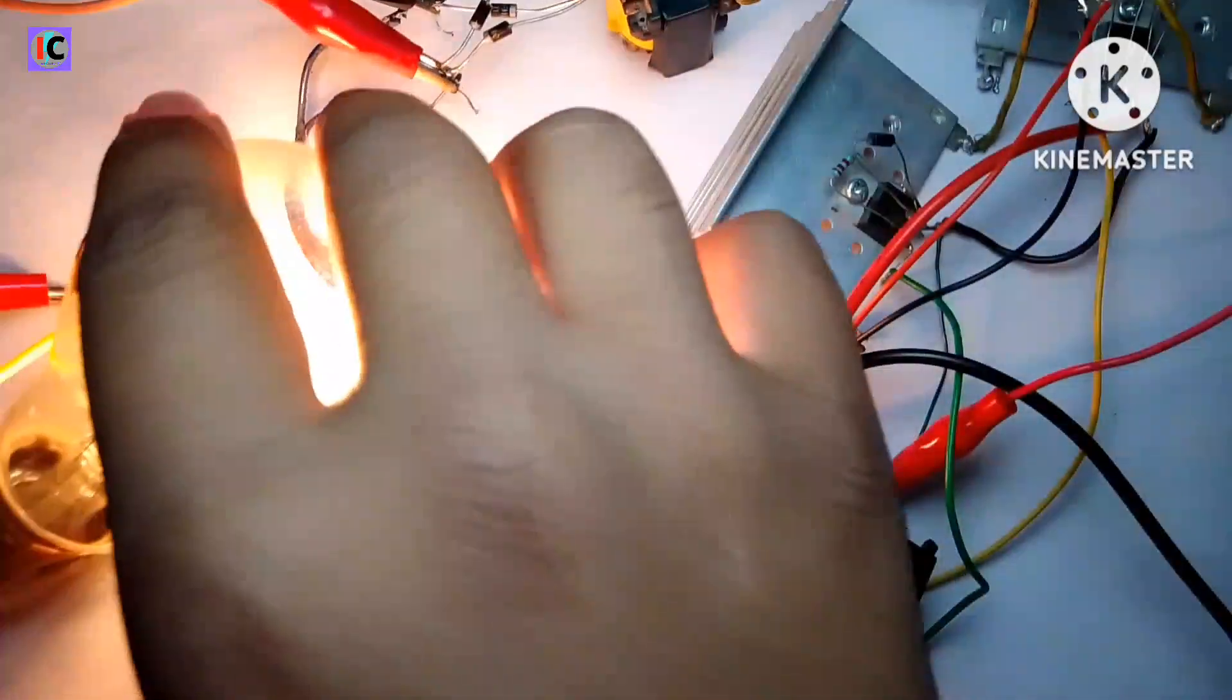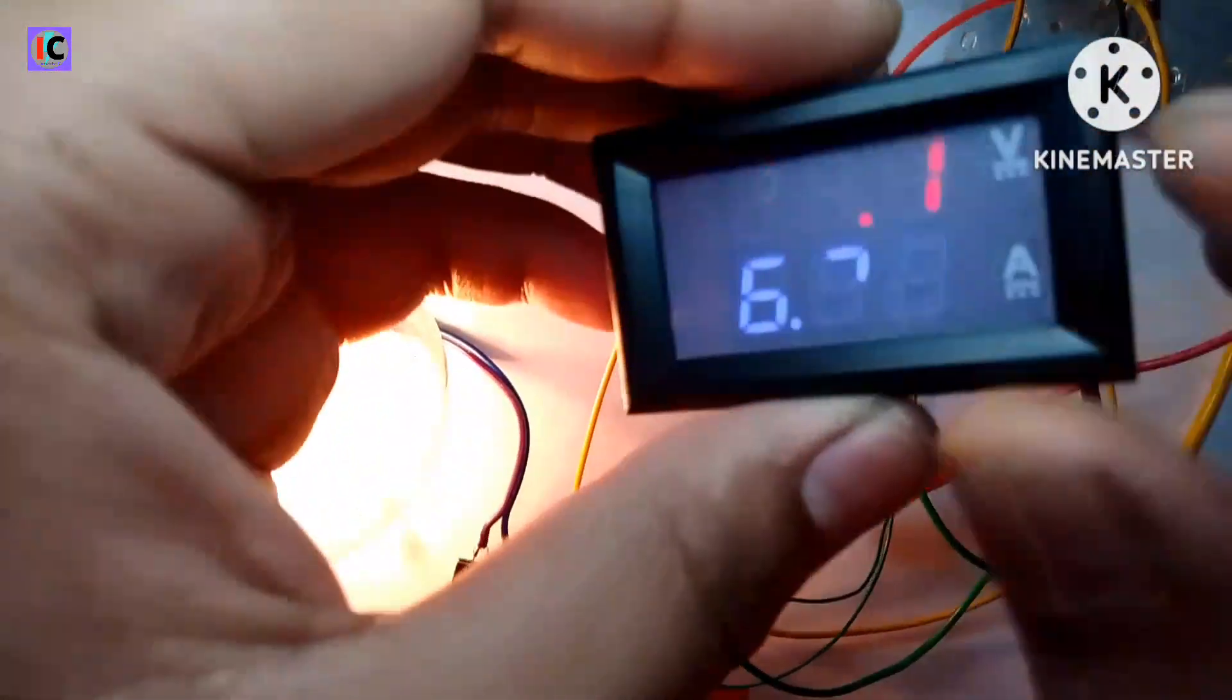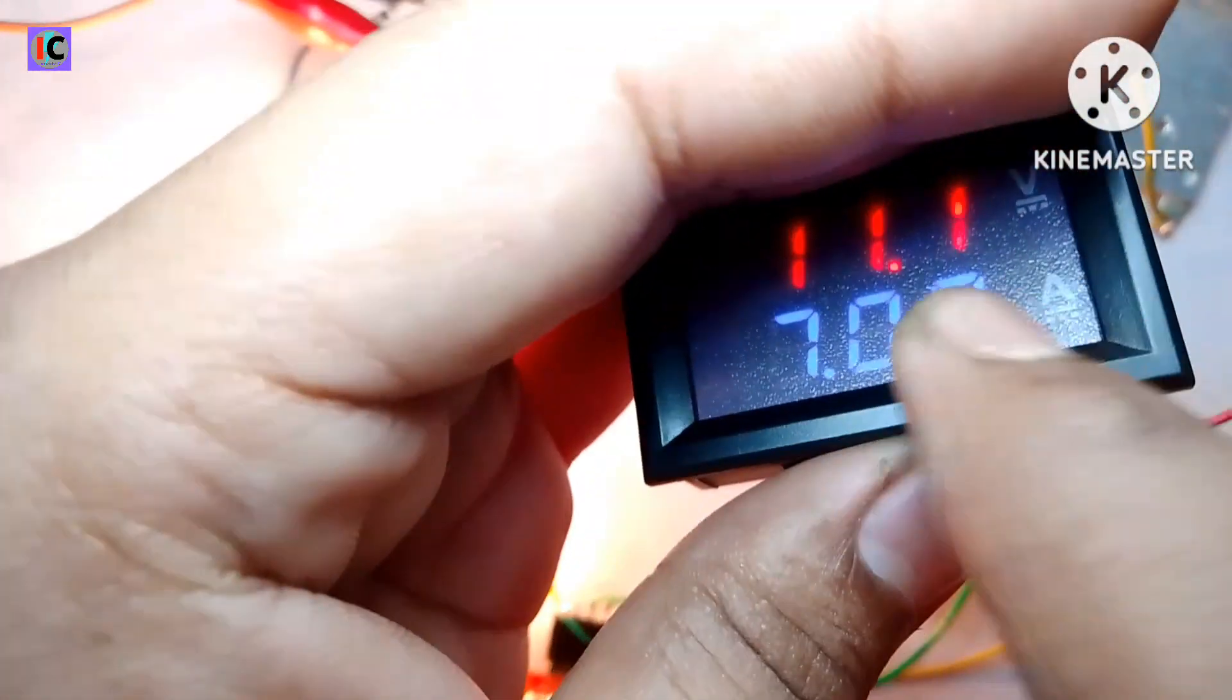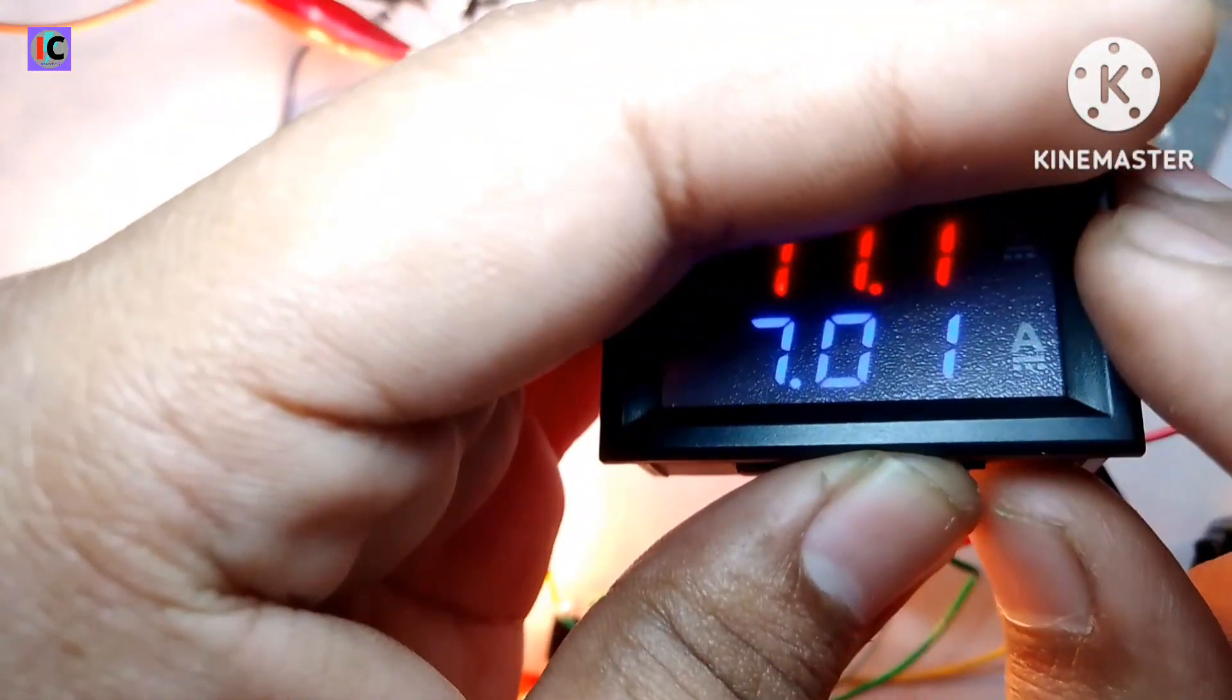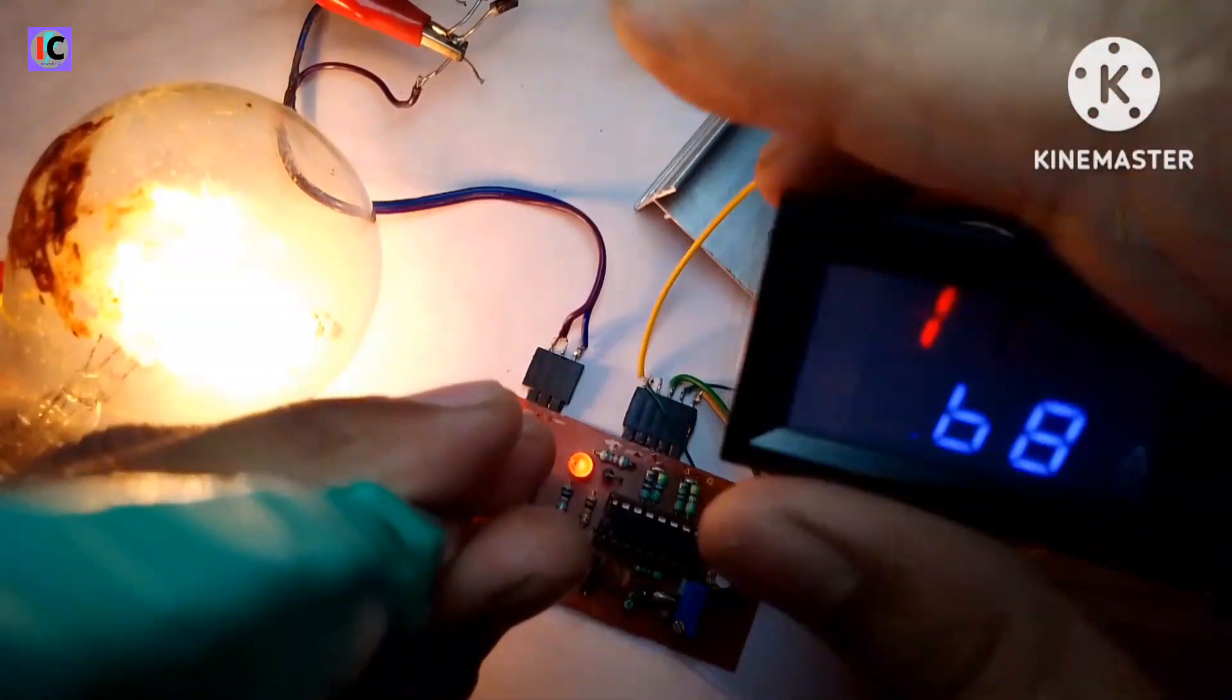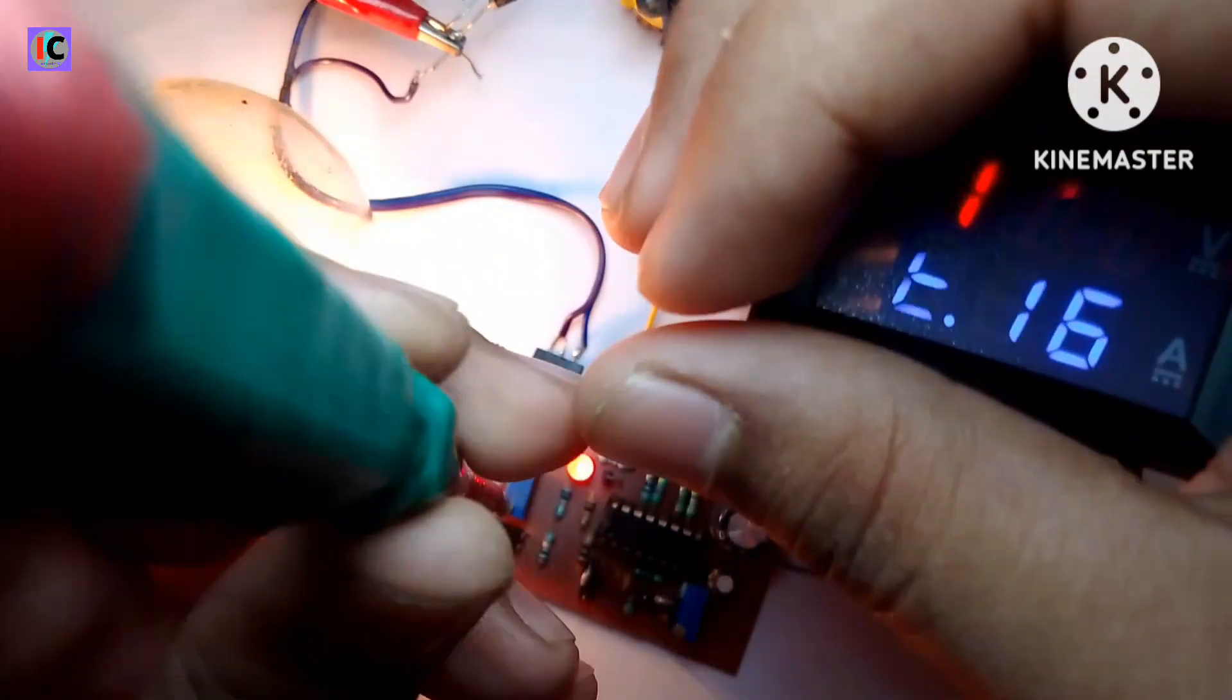This 100 watt bulb is also glowing very bright. The current consumption you can see on the meter - it's 7 amperes at 11 volts. We rotate it clockwise, then the voltage drops a bit. You can see in the amp meter the current consumption is decreasing from 7 amperes to below.